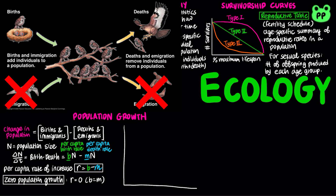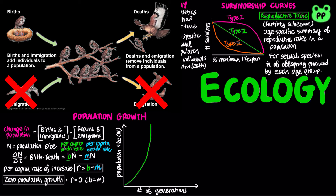Exponential population growth is population increase under idealized conditions, which results in a J-shaped curve in a plot of population size against the number of generations. The general equation for exponential growth is dN/dt equals the instantaneous per capita rate of increase times the population size N.